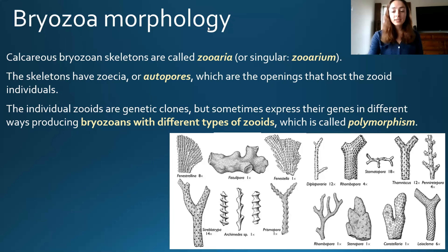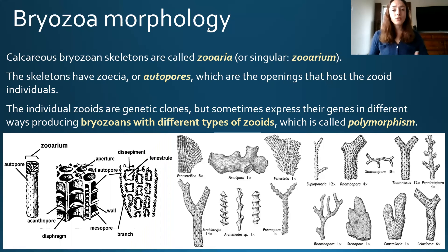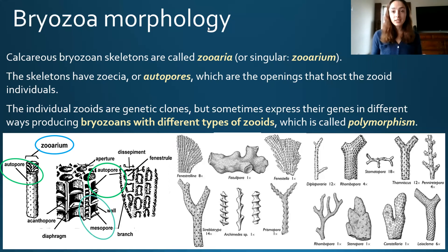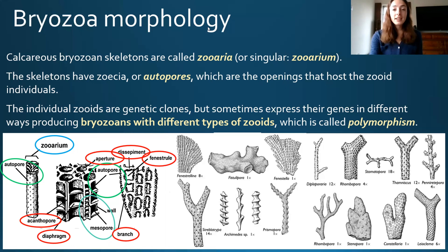Let's go over how we label different structures in bryozoan fossils. The zoarium is the entire calcareous skeleton of the whole animal. The autopores are the openings where the zooids lived. Mesopores are smaller pores that host a secondary type of zooid when polymorphism is present — so the major zooid type is in autopores, and the secondary type gets differently shaped pores called mesopores. Other labeled structures include apertures, dissepiments, fenestules, branches, diaphragms, and acanthopores, which we'll discuss in coming slides.